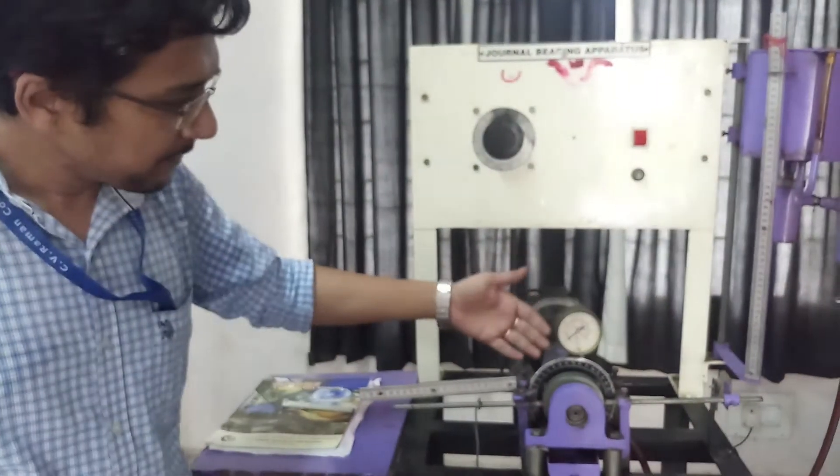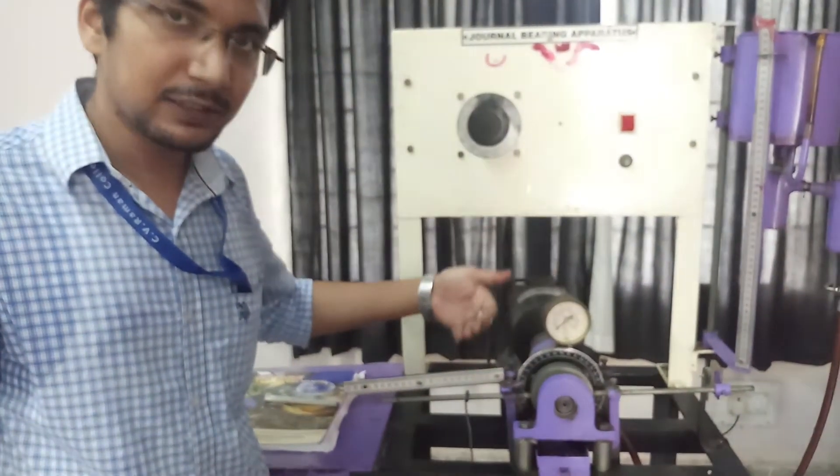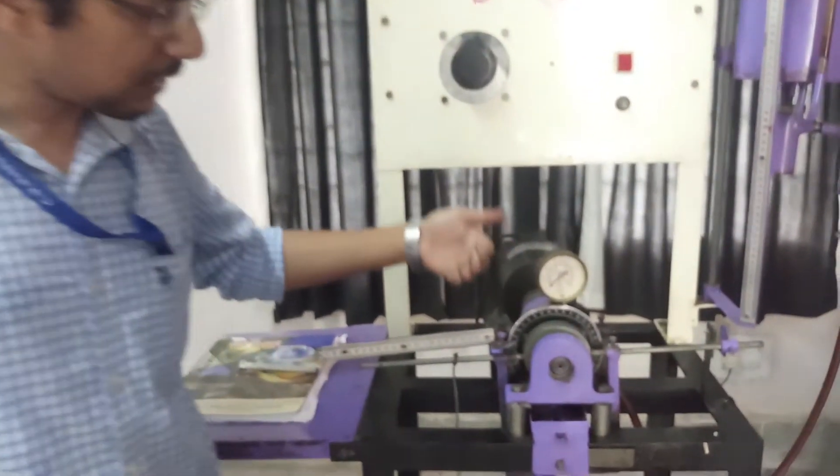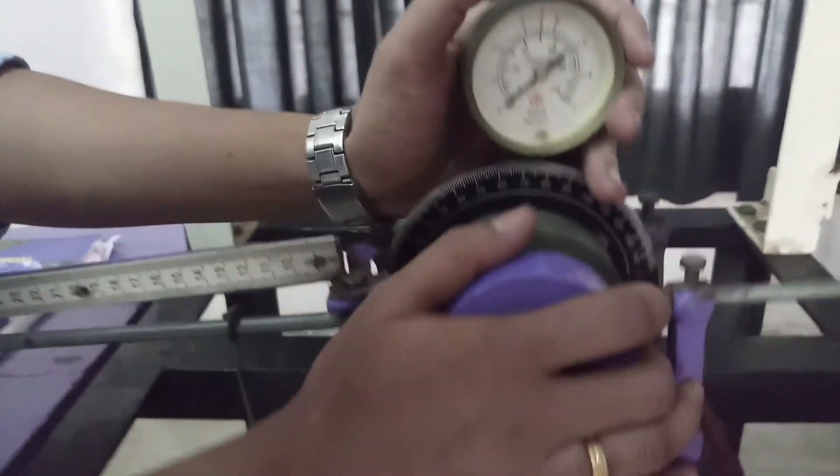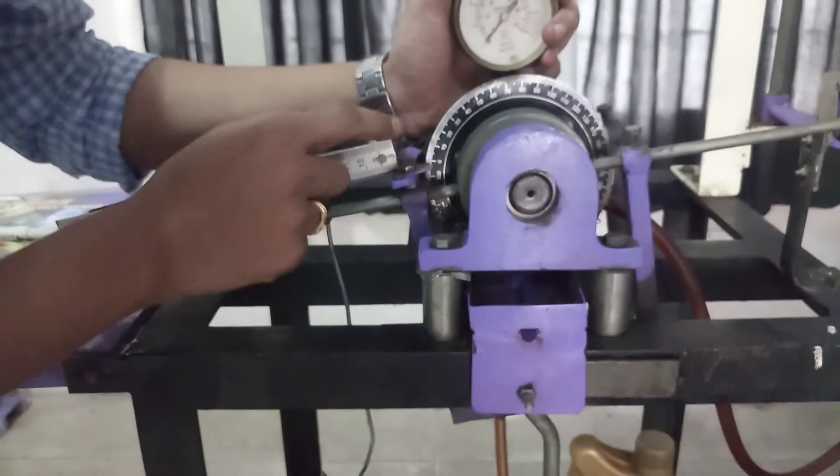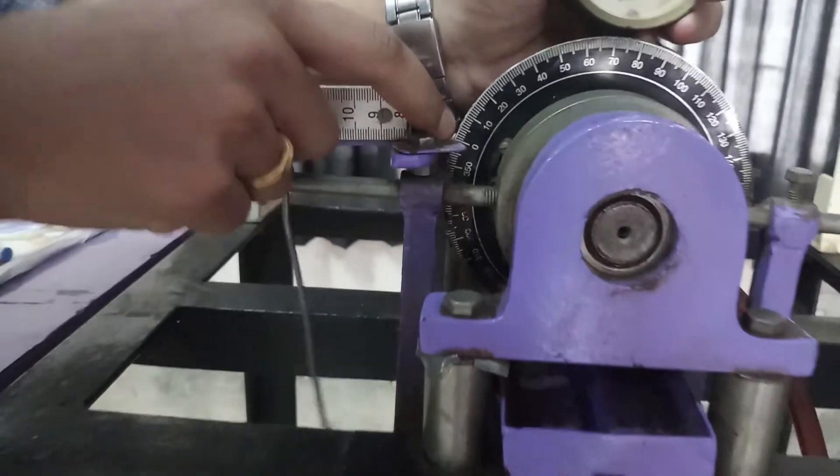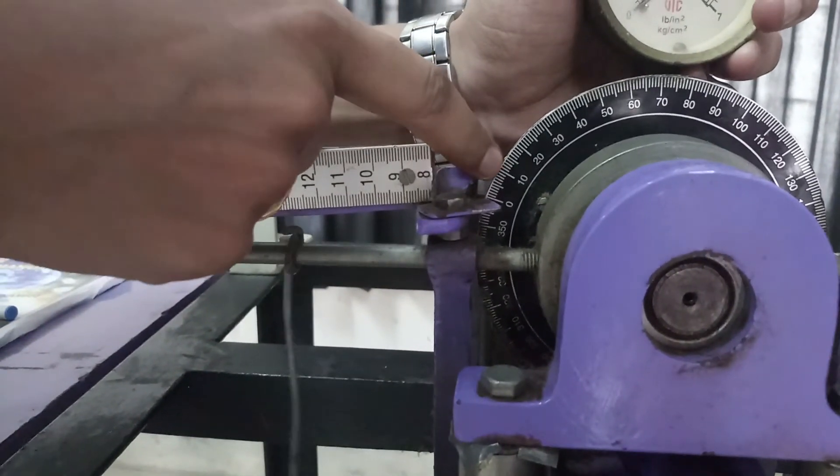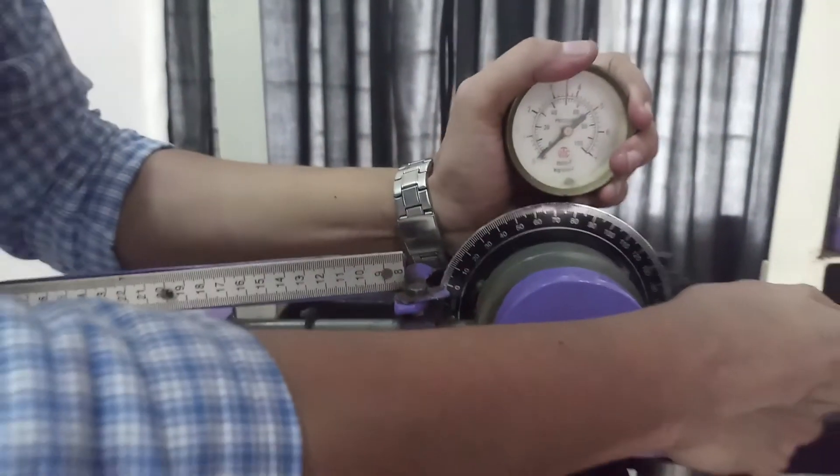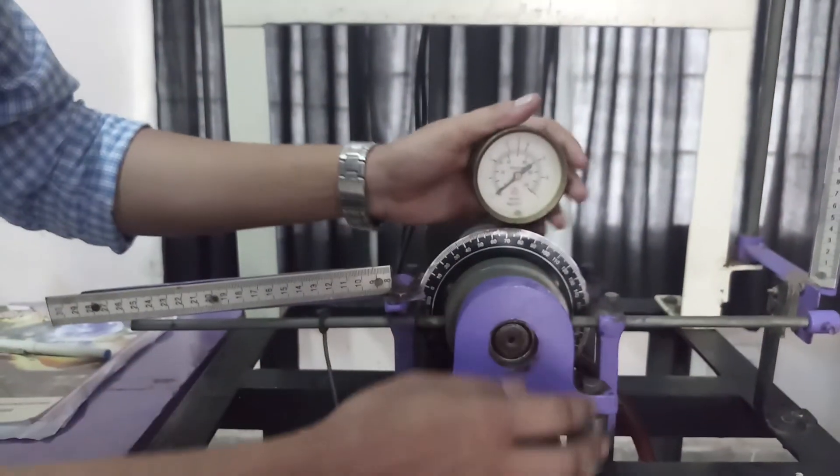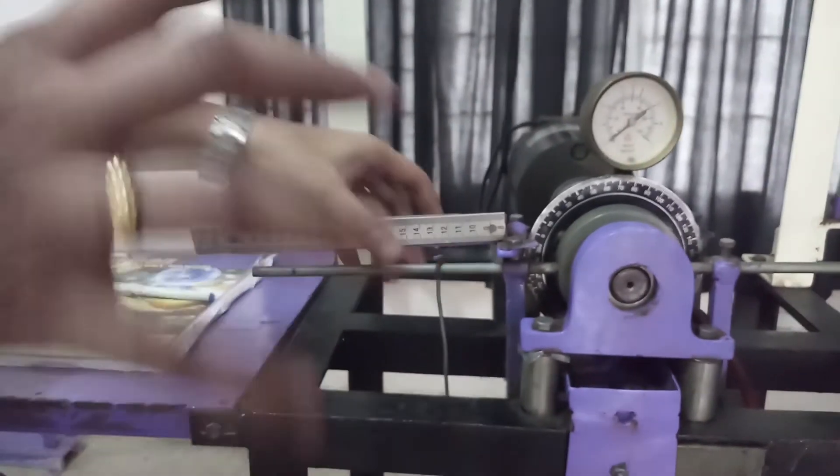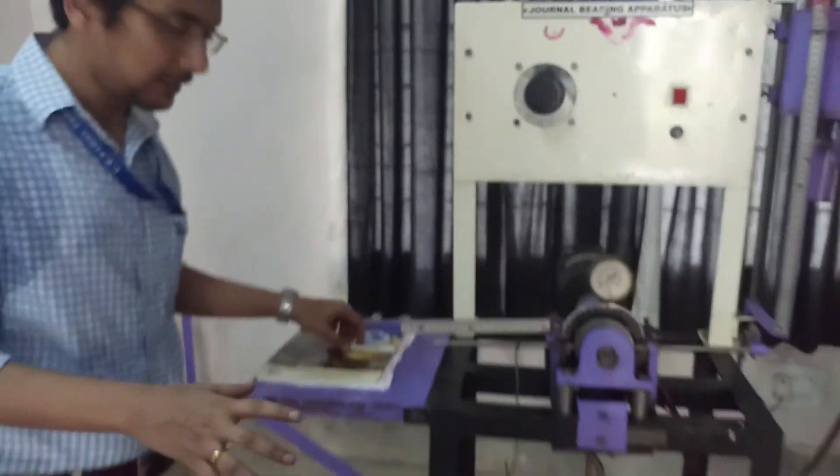This is a full journal bearing - it means 360 degrees. We will measure the pressure at different angles. This is how this apparatus works.